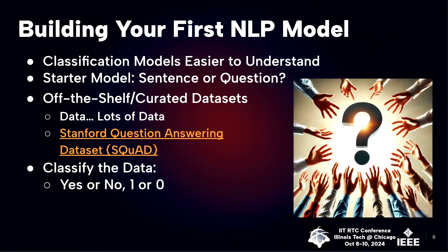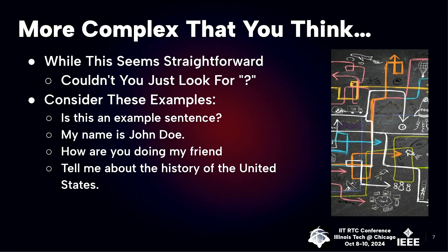Building this question classifier model is actually more complex than you might think. The obvious answer would be: just look for a question mark at the end of the sentence. But it's a lot more complicated than that. For example, 'How are you doing, my friend' — without a question mark. Humans are flawed; we don't always follow punctuation rules. And then the last example: 'Tell me about the history of the United States.' Technically it's a question, but it doesn't end in a question mark, and it doesn't even begin with who, what, when, where, why, or how. But it's technically a question — a lot more complex than you'd think.